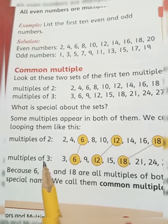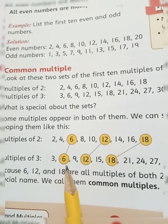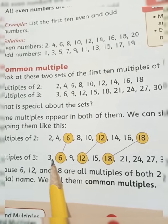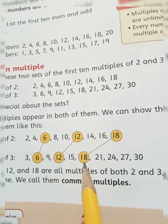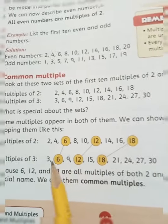And multiples of three — those numbers which come in the table of three: 3, 6, 9, 12, 15, 18, 21, 24, 27, 30.